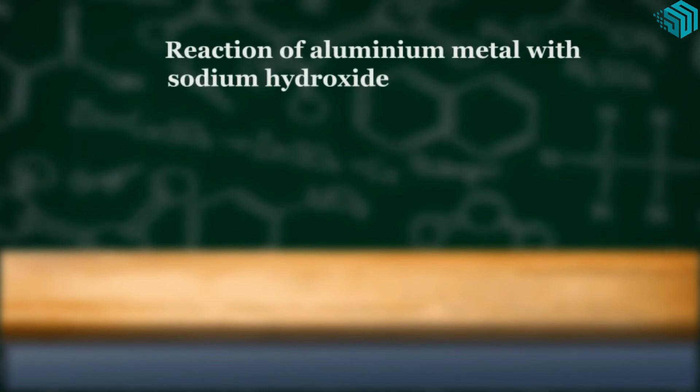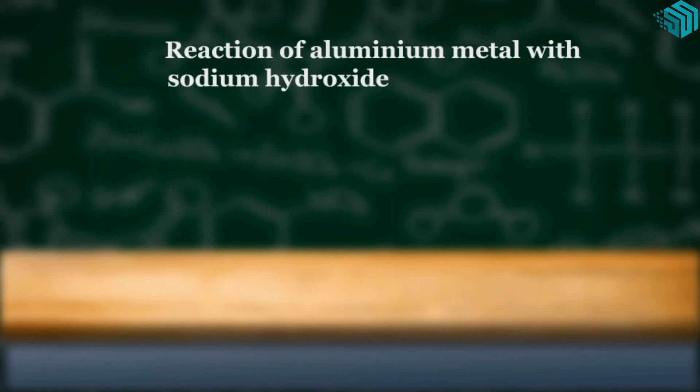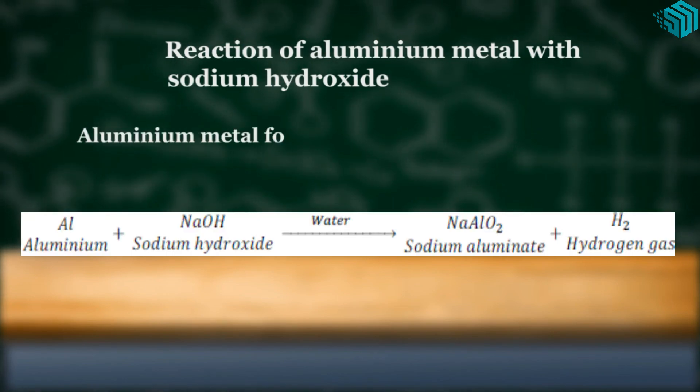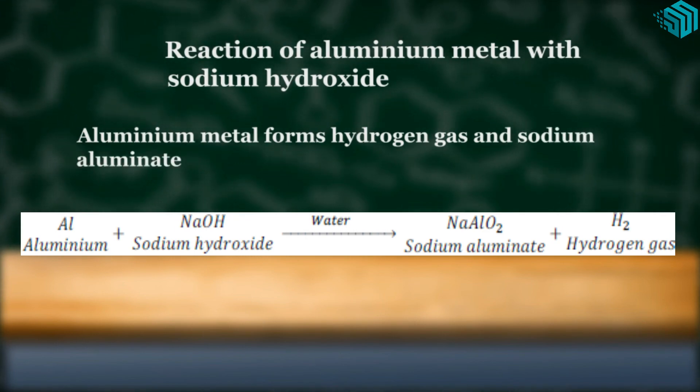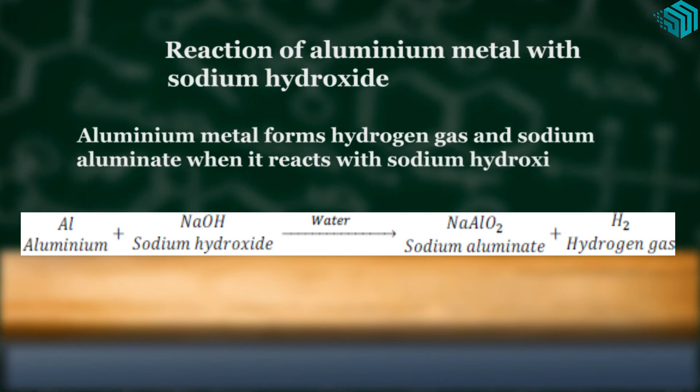Reaction of aluminium metal with sodium hydroxide. Aluminium metal forms hydrogen gas and sodium aluminate when it reacts with sodium hydroxide. Aluminium plus sodium hydroxide in the presence of water gives us sodium aluminate plus hydrogen gas.